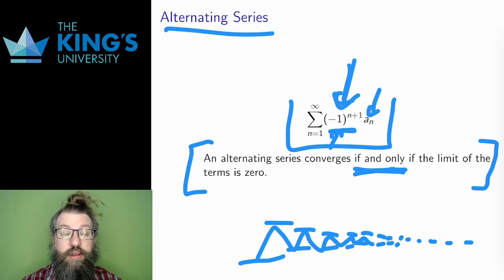So, for alternating series, the test is really nice. I just have to check the limit of the terms. If the limit of the terms is zero, it converges, and if not, it diverges.